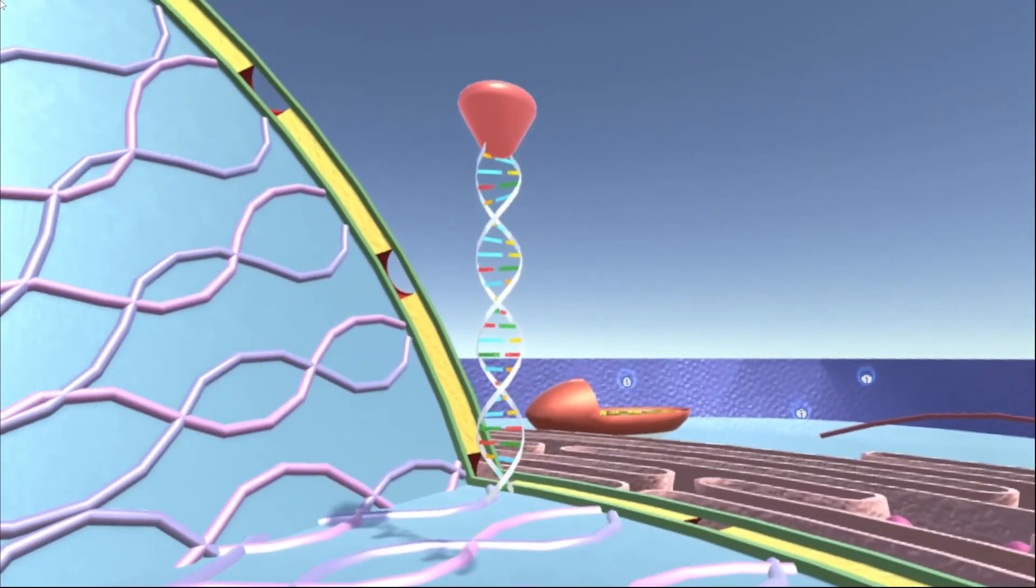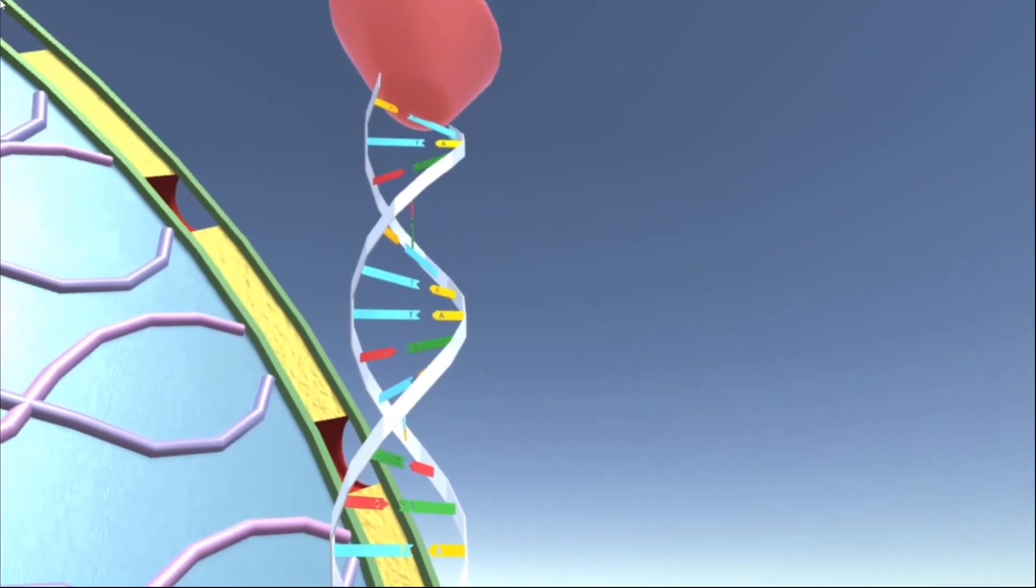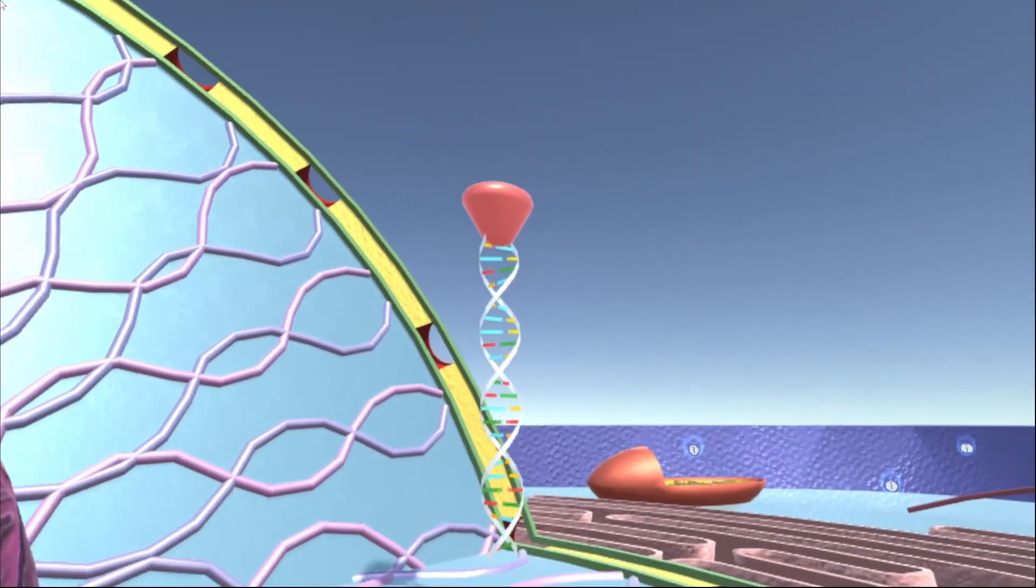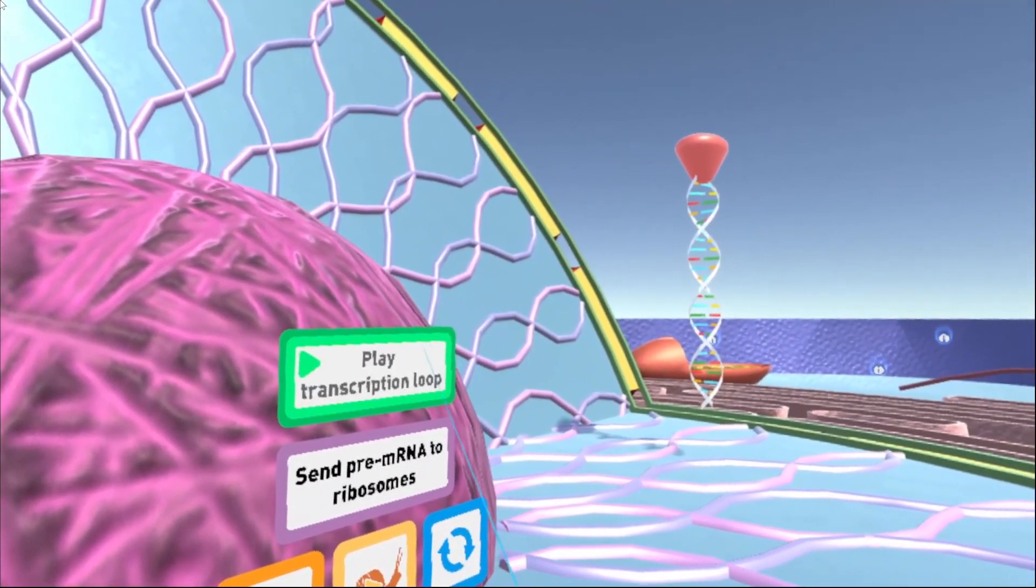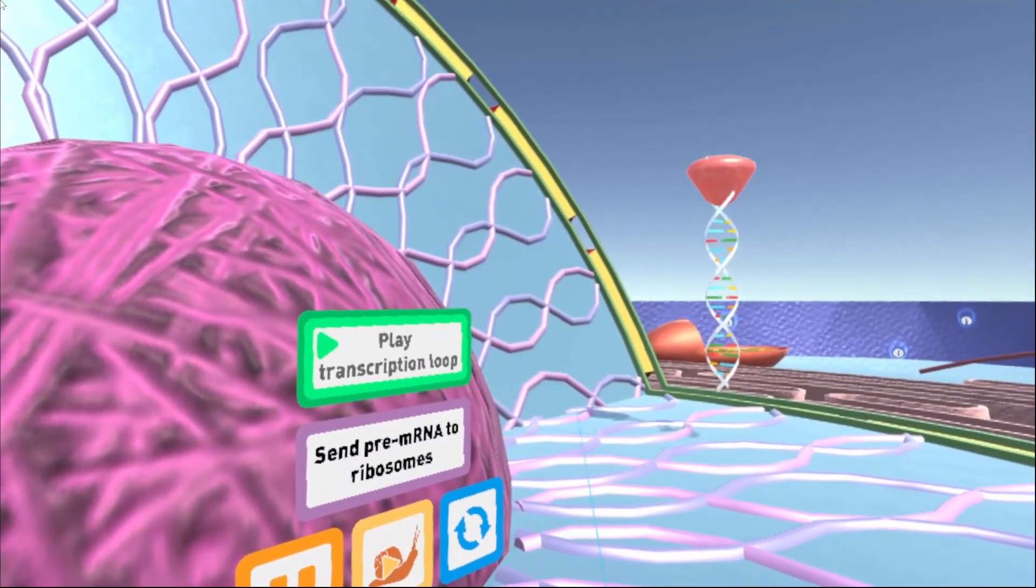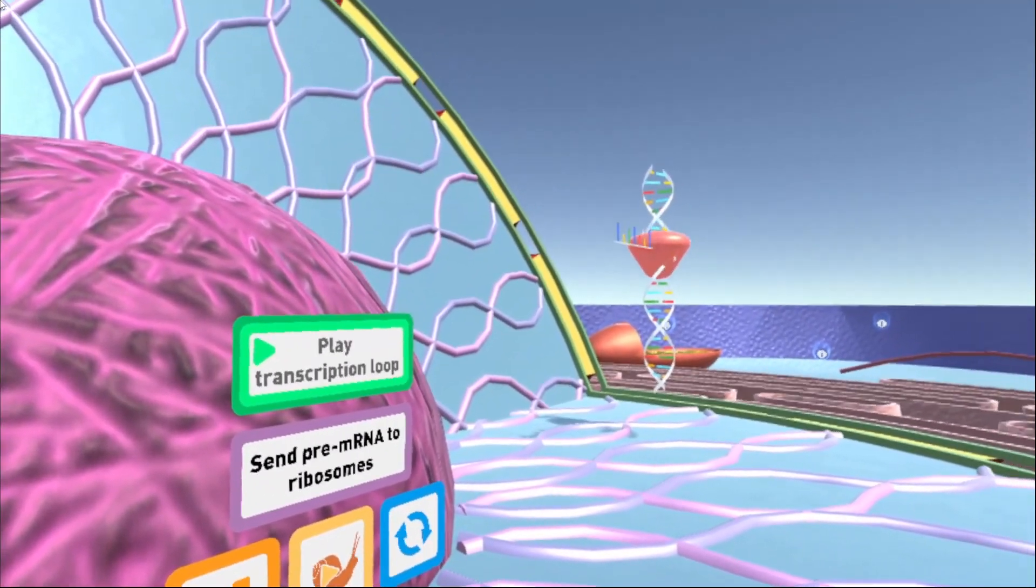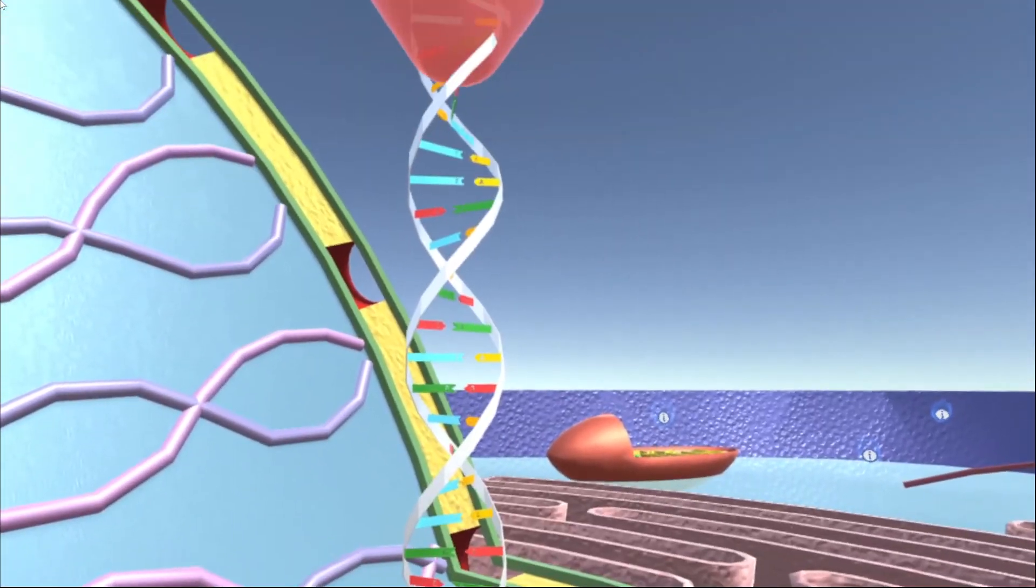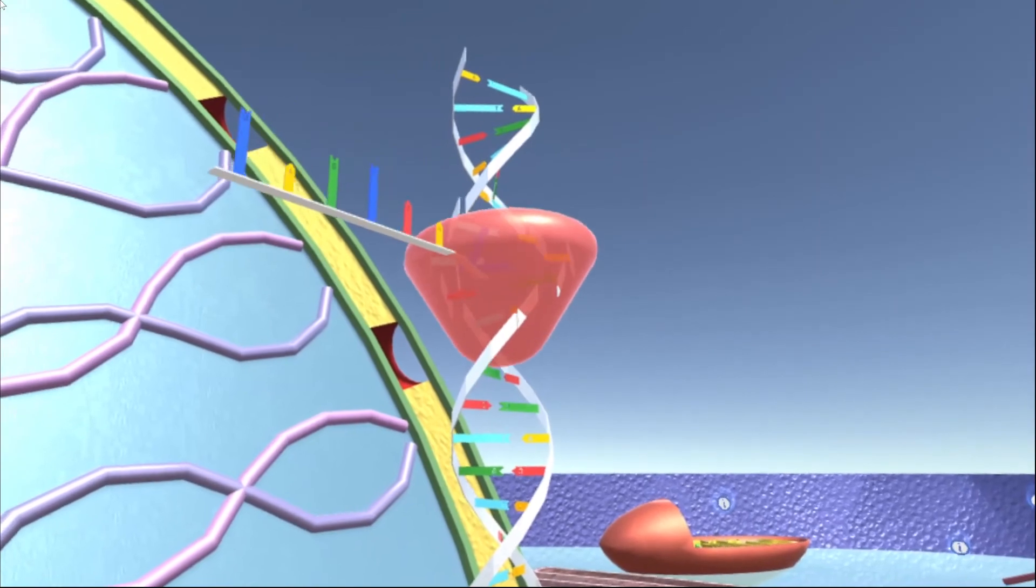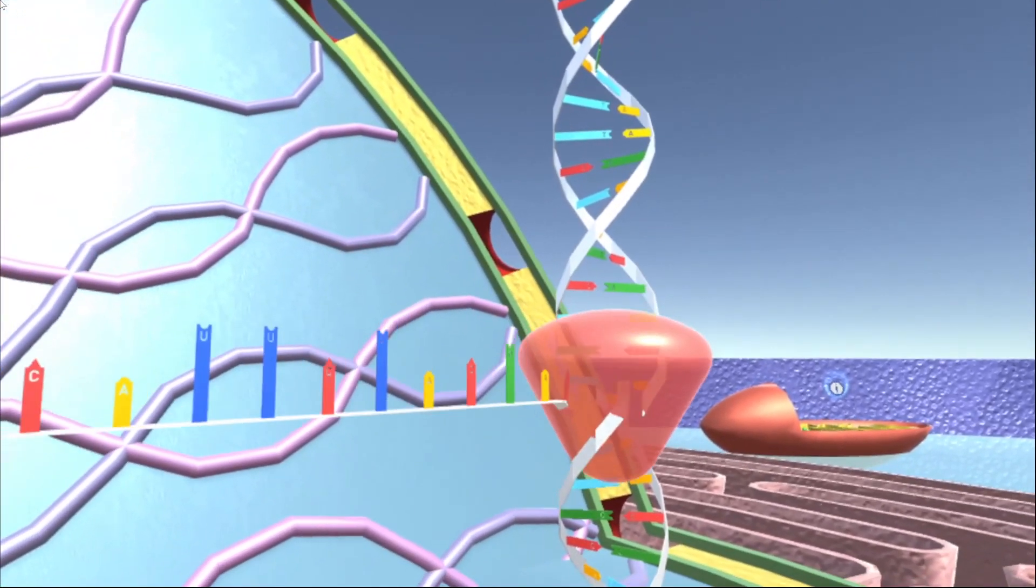And so now we are standing right in front of our nucleolus within our nucleus. And over to our right we have a pretty big strand of DNA. We can actually use these buttons over here to control that strand. So I'll click on this green button that says play transcription loop.